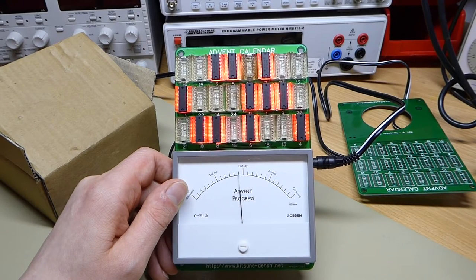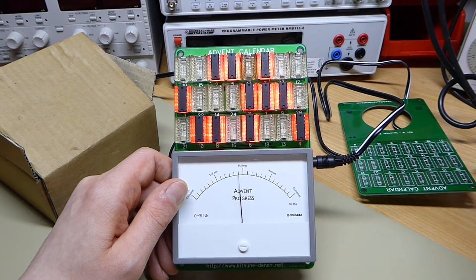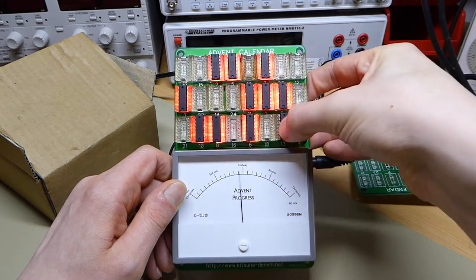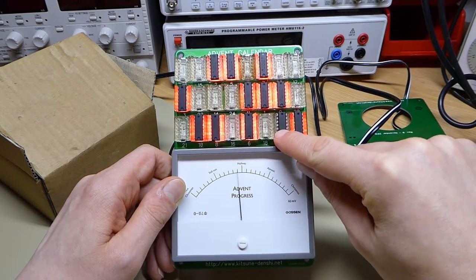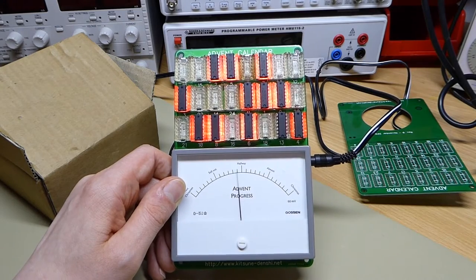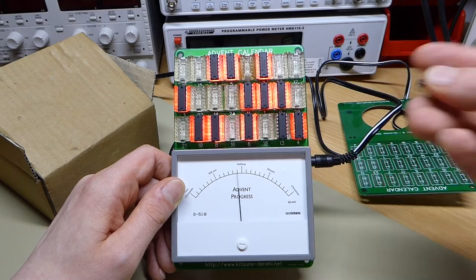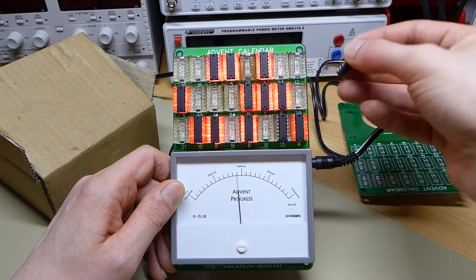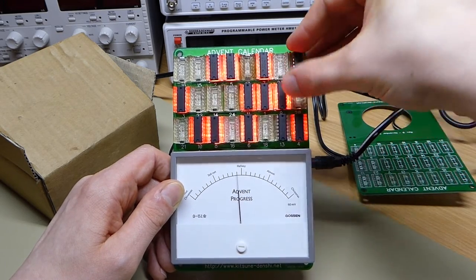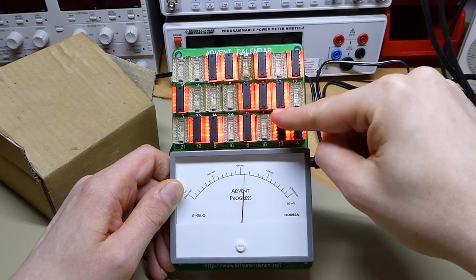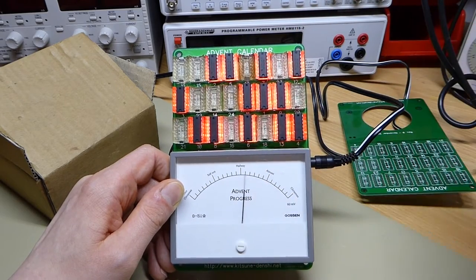If I plug in the IC for day 13, for example, which is down here, you can see that the socket doesn't light up and the meter didn't move. That's because I haven't plugged in number 12 yet. Only when I go ahead and put in number 12, which is up here—12 and 13 lit up and the meter moved for the two days.